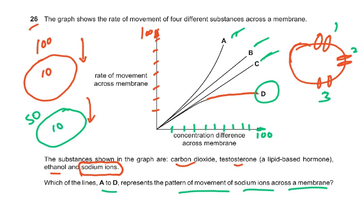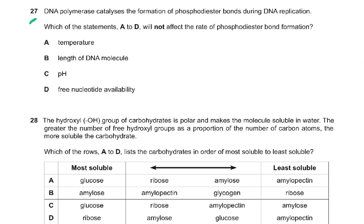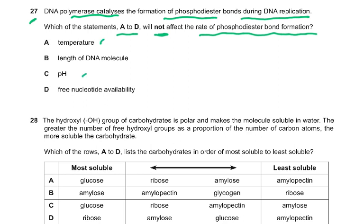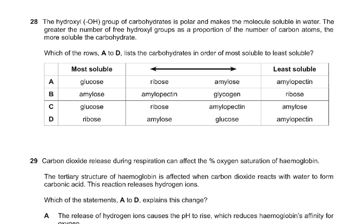Coming to question number 27: DNA polymerase catalyzes the formation of phosphodiester bonds during DNA replication. Which of the statements A to D will NOT affect the rate of phosphodiester bond formation? If it's an enzyme, temperature will affect it, pH will affect it, and free nucleotide availability will affect it. What will NOT affect it is the length of the DNA molecule, because rate is per unit time — 10 or 20 phosphodiester bonds formed per unit time. So the length will not affect the rate.